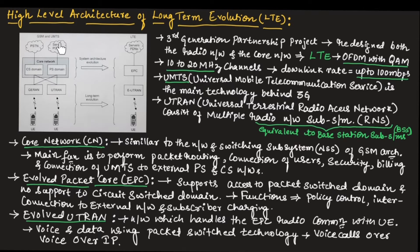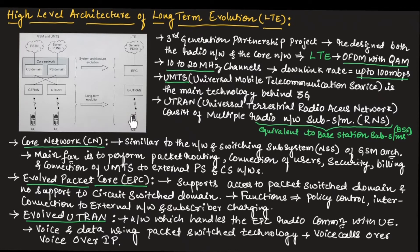The packet switch domain is replaced with EPC, which is Evolved Packet Core, and UTRAN is evolved into E-UTRAN, which is Evolved Universal Terrestrial Radio Access Network. Along with this, the user interface is also evolved so it can adapt to any changes in the technology. The user equipment is also evolved, meaning changes are made so it can adapt to the long-term evolution of communication technology.